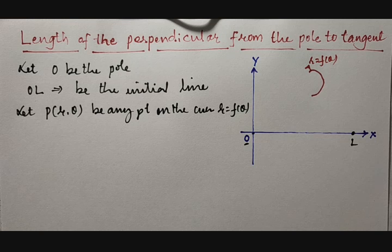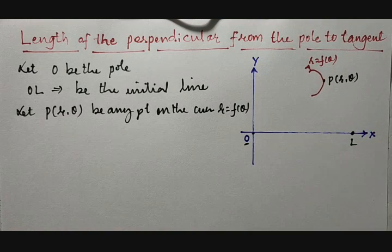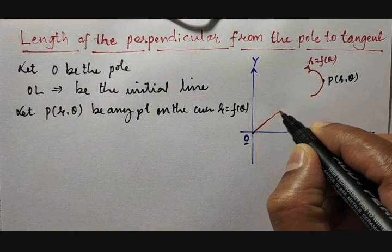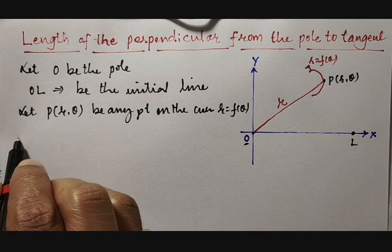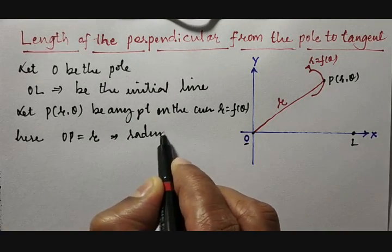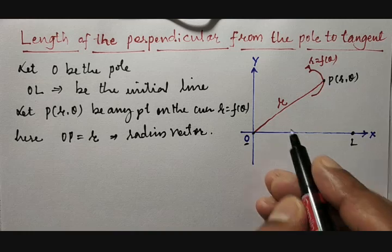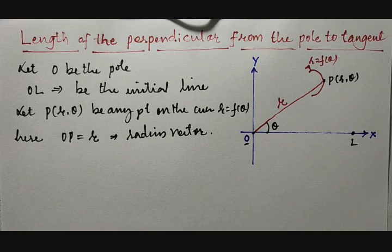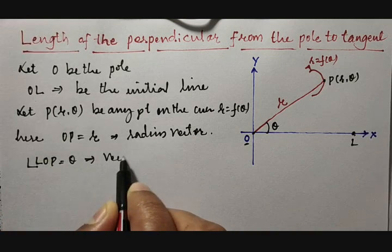P is a point on the curve. The distance from O to P will be taken as r, which is nothing but the radius vector. When this is drawn, there will automatically be an angle between the initial line and the radius vector, called θ. The angle LOP equals θ, and this is called the vectorial angle — the vectorial angle between the initial line and the radius vector.